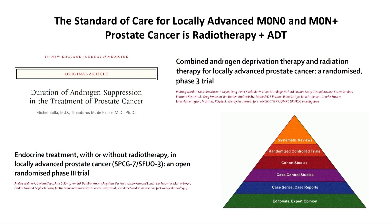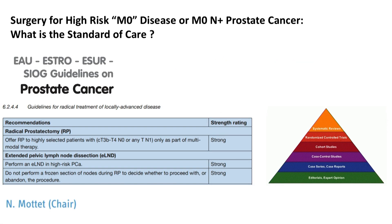For surgery, it's the opposite — we're at the bottom of the pyramid: editorials, case series, and some good cohort studies, but no randomised trials of any note. Despite this, it's still in the EAU guidelines that radical prostatectomy is an option.